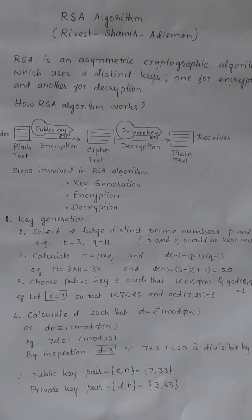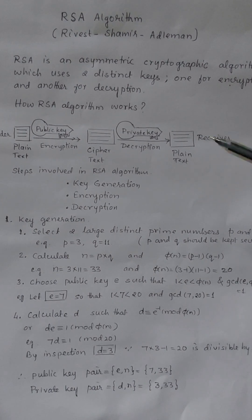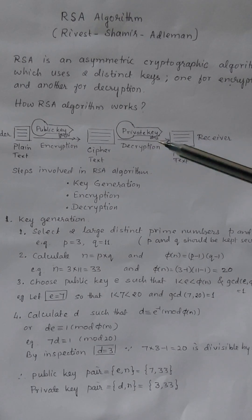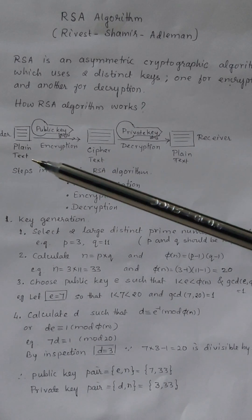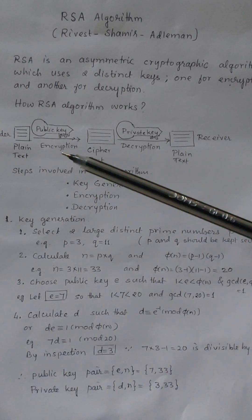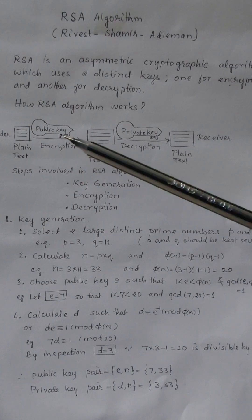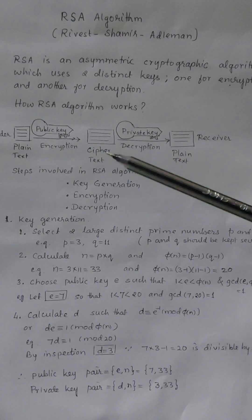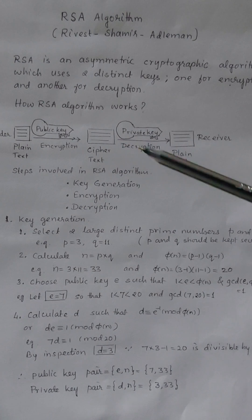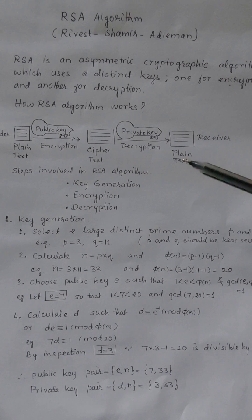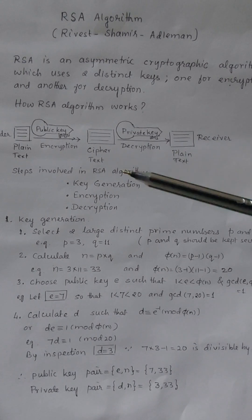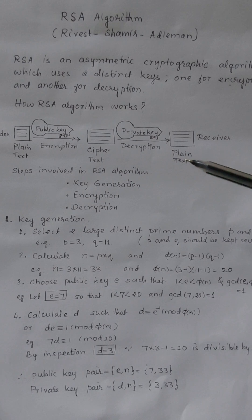The receiver will have two keys: one is a public key and another is a private key. He will share the public key with the sender and keep the private key secret. Using the public key, the sender will send the plain text — it will be encrypted using the public key into ciphertext, which is then decrypted using the private key back into plain text.